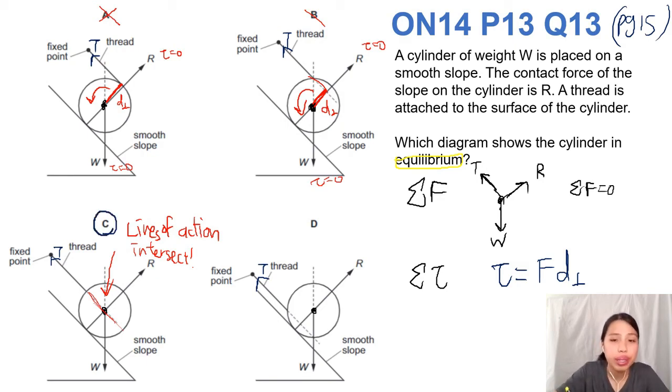For fun, let's just look at the last one as well. D - R and W acting on the pivot, no torque. T has some perpendicular distance, so somewhere here that's the perpendicular distance. So there will be a net torque clockwise this way.